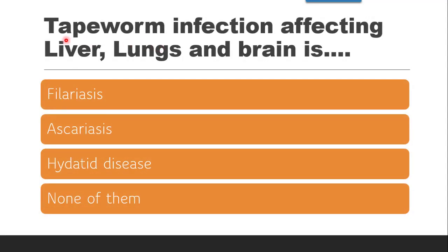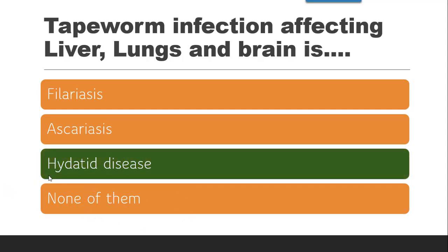Next question: Tapeworm infection affecting liver, lungs, and brain is — whether it is filariasis, ascariasis, hydatid disease, or none of them. Ascariasis is a small intestine infection. Filariasis is a roundworm infection. Ascariasis is also a roundworm infection confined to the small intestine. Hydatid disease is a tapeworm infection which affects the liver, lungs, brain, etc. So the correct answer is hydatid disease.